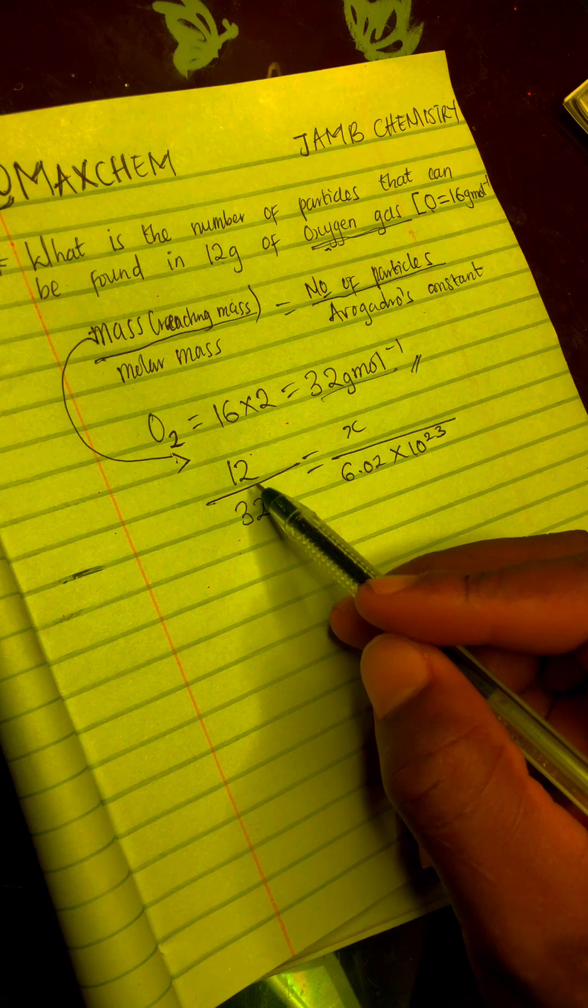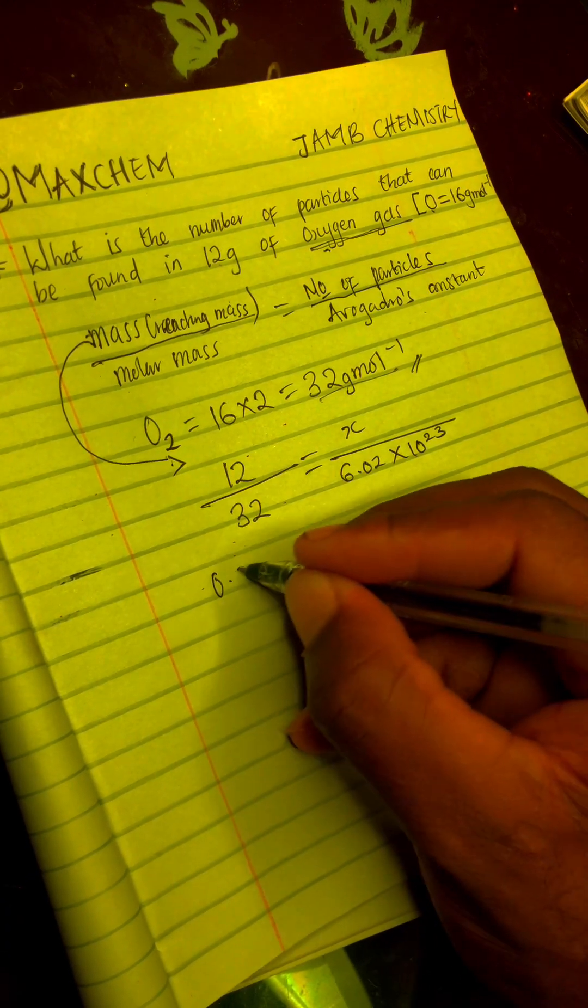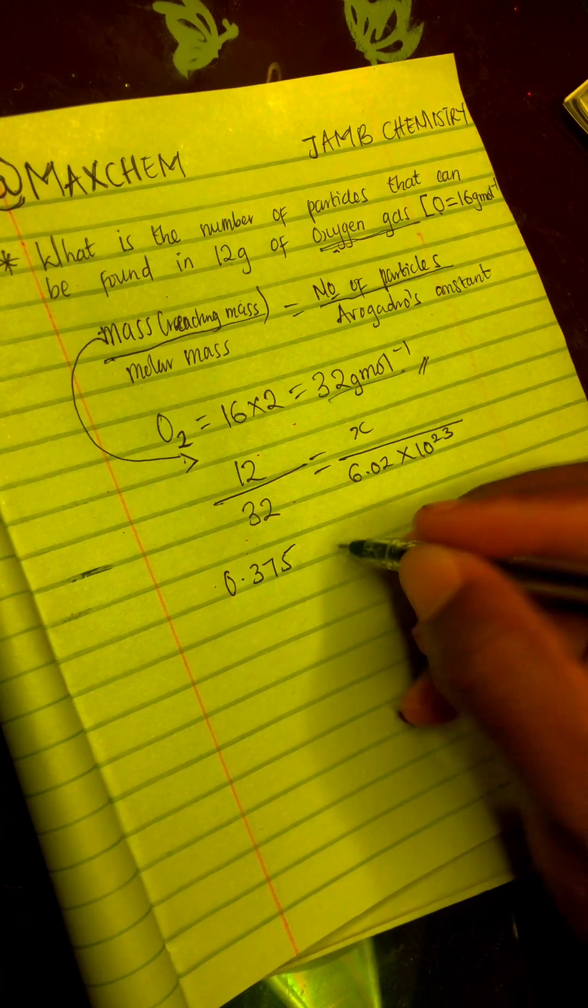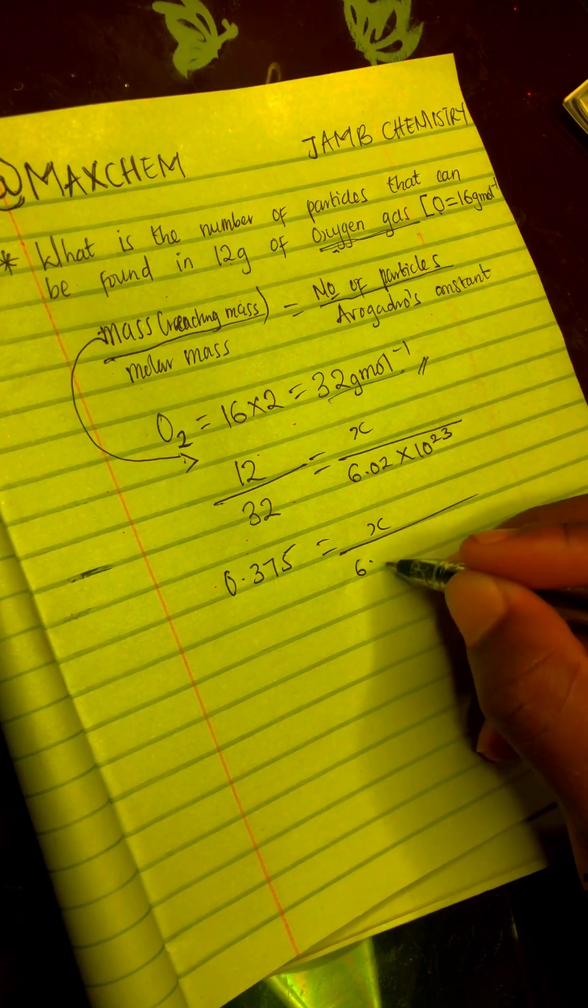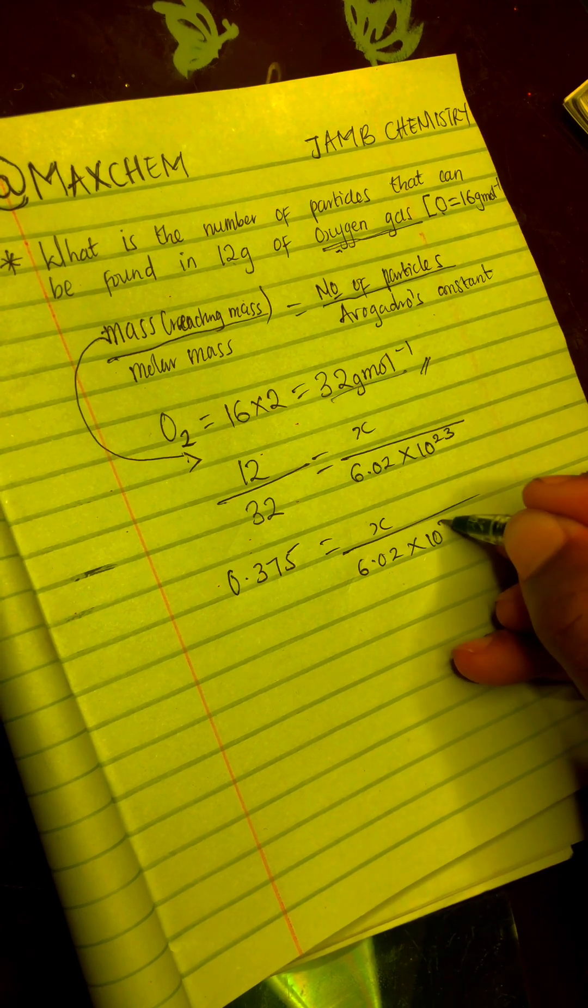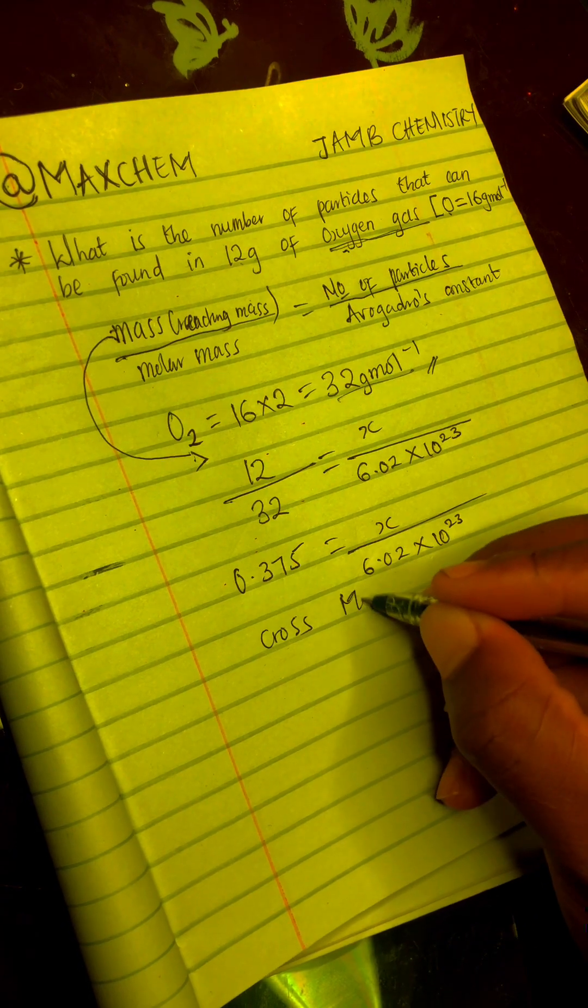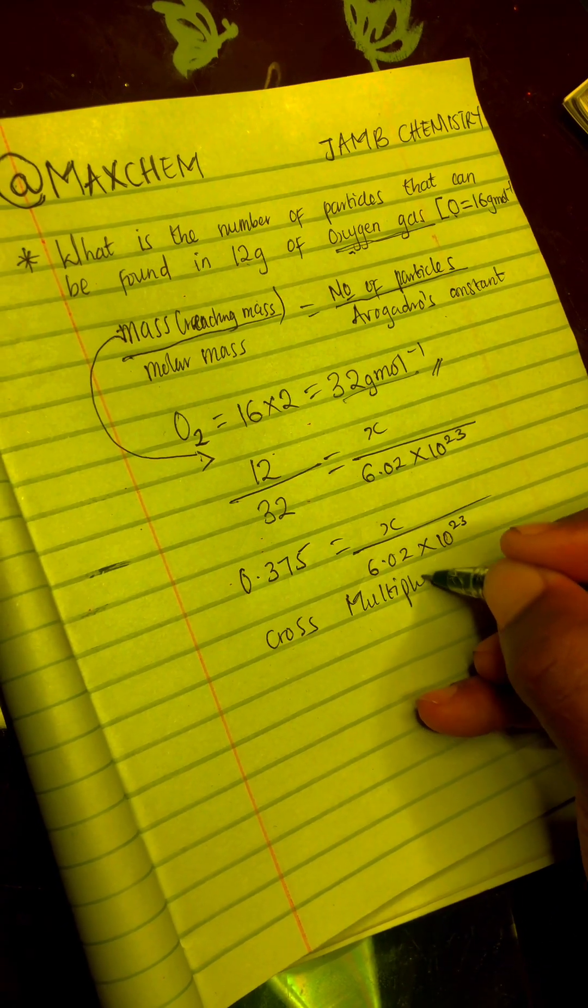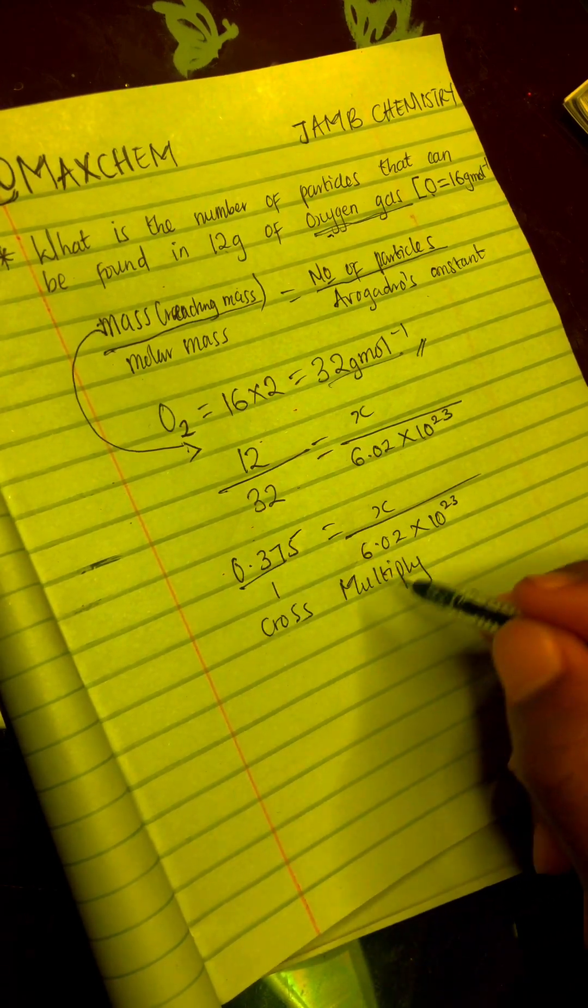Now, 12 divided by 32, you can use your calculator. That would give you 0.375 is equal to X all over 6.02 times 10 raised to the power of 23. What do we do here? We cross multiply. When you cross multiply, it is going to be like this.